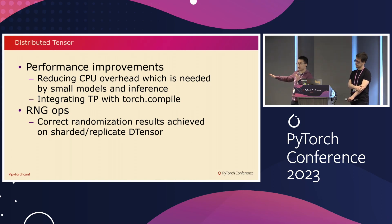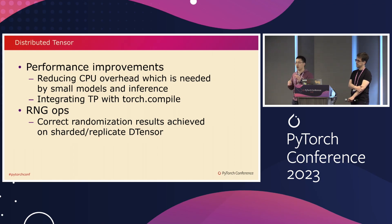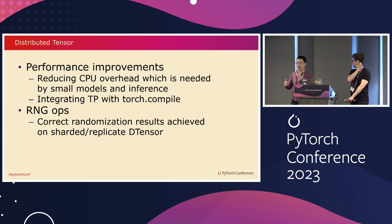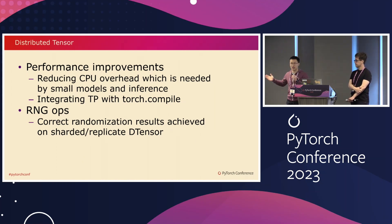We also have more optimization, for example more overlapping between the collective and the computation. Last but not least, we enabled random generator-based ops — for example, for a replicated DTensor, we want dropout to have the same behavior across all ranks, and that is now enabled. Now I'm going to hand over to Rodrigo to talk about the control plane.